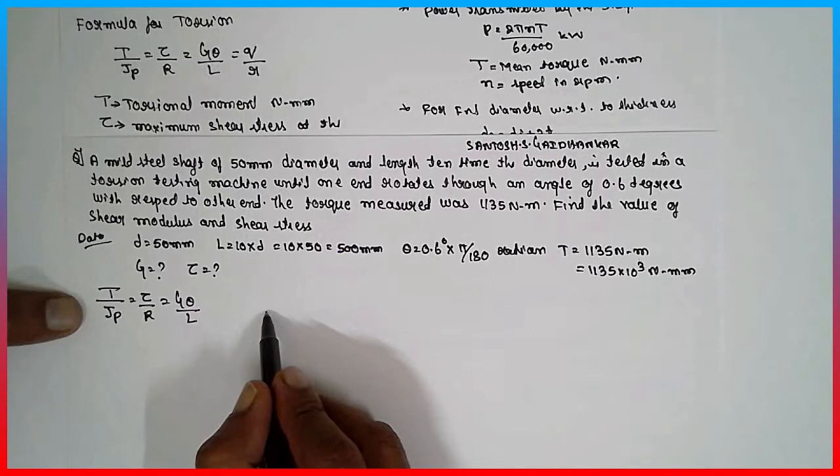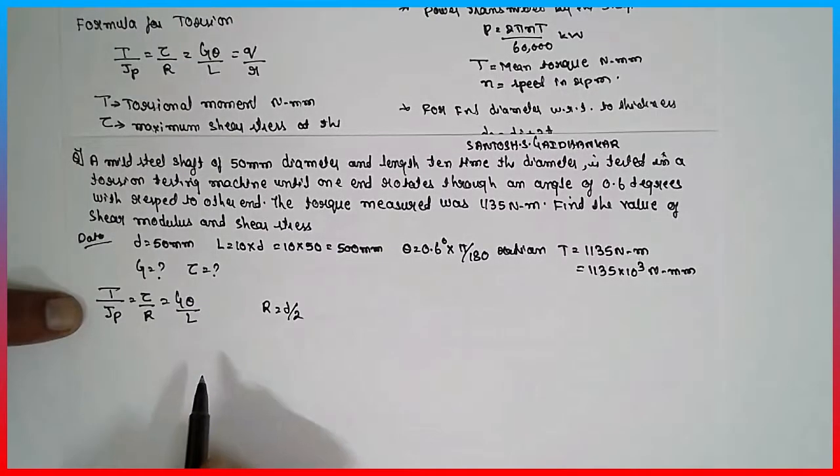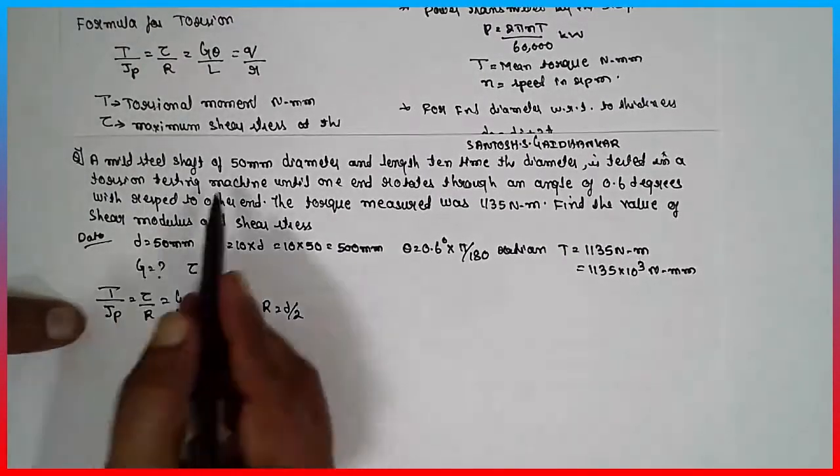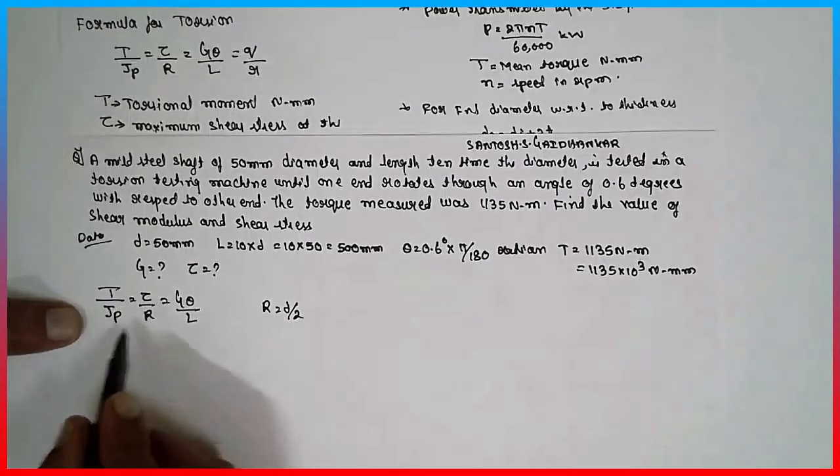So, there is a solid shaft. Therefore, R will be D divided by 2. If two diameters are given, then it is hollow. The single diameter indicates a solid shaft.